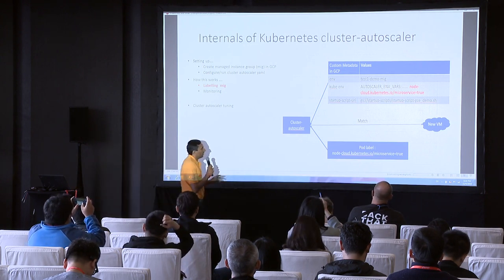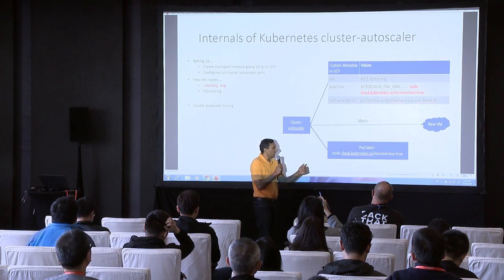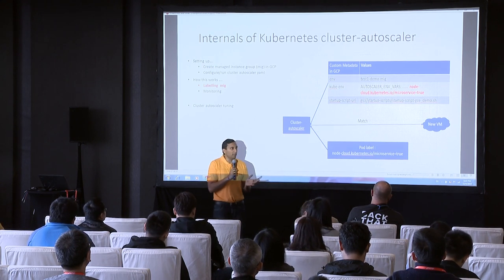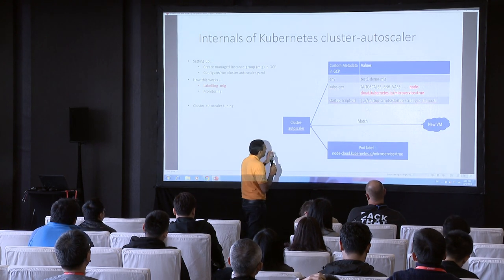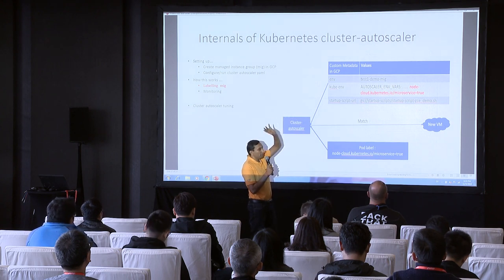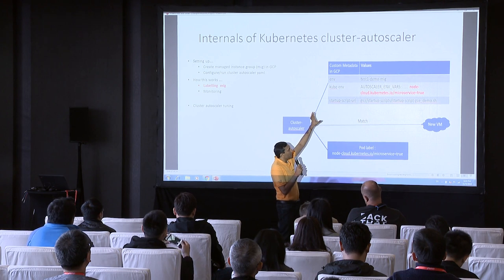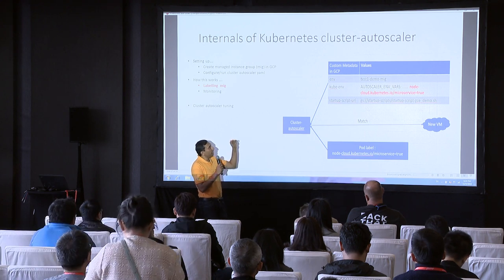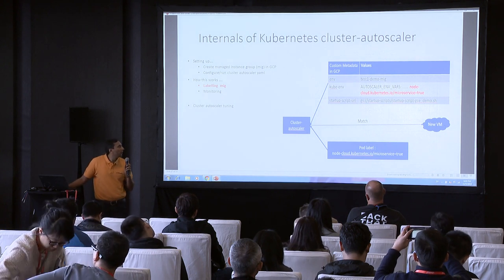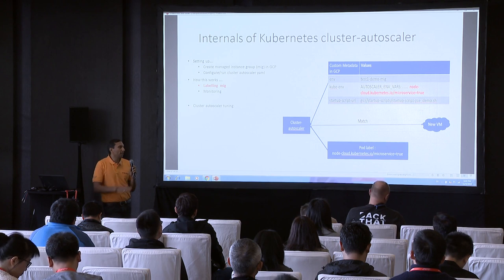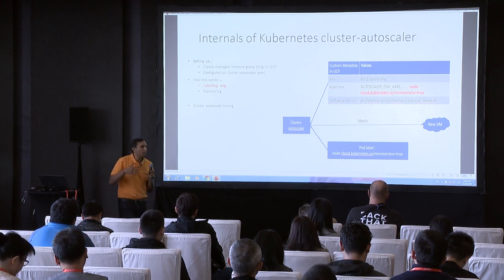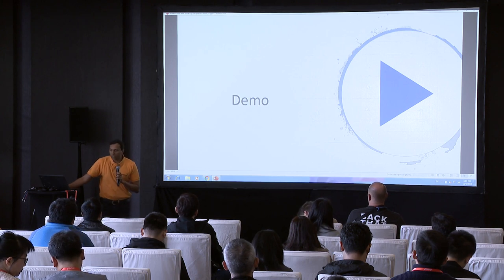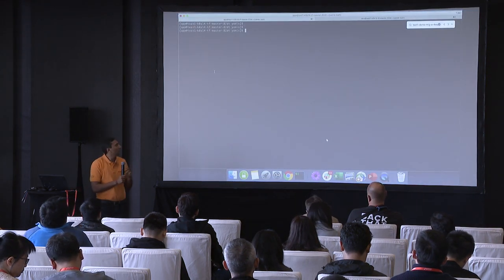The magic happens in the labeling. Take a scenario where we create a pod with a label like microservice=true. When the pod gets created, there's no node available with that matching label, so the pod gets stuck in pending state. The autoscaler monitors multiple node groups, caches the data, and knows exactly that if the pod label matches one of the node labels, it will scale that particular node group. It creates a new VM, which joins the Kubernetes cluster, and the pod comes back into running state.